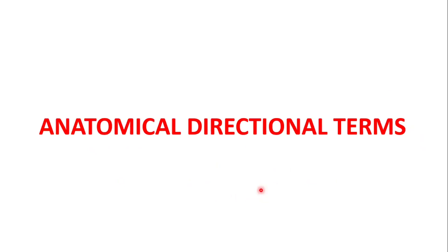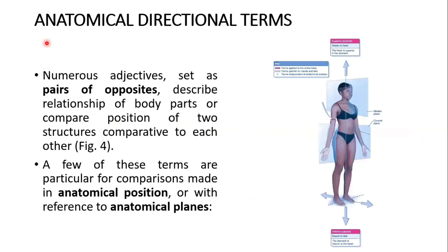Anatomical directional terms. Numerous adjectives set as pairs of opposites describe the relationship of body parts or compare the position of two structures relative to each other. A few of these terms are particularly for comparison made in anatomical position or with reference to anatomical planes. On anatomical planes, I will take a separate lecture video.